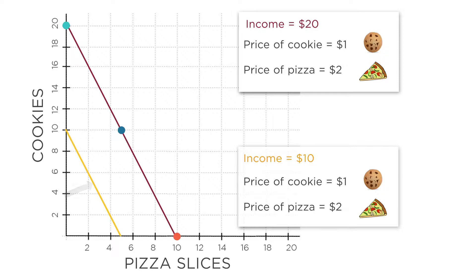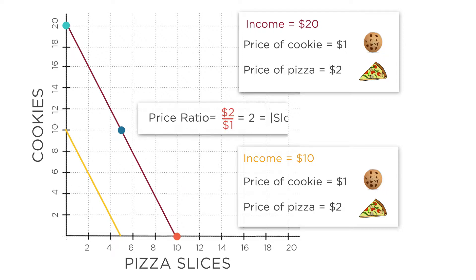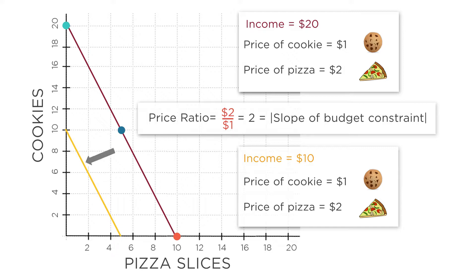This makes sense. The slope of the budget constraint is a measure of the price ratio. Here, the prices didn't change at all, so the price ratio didn't change. Only your income changed. So the budget constraint goes outward or inward, but it has the same slope.